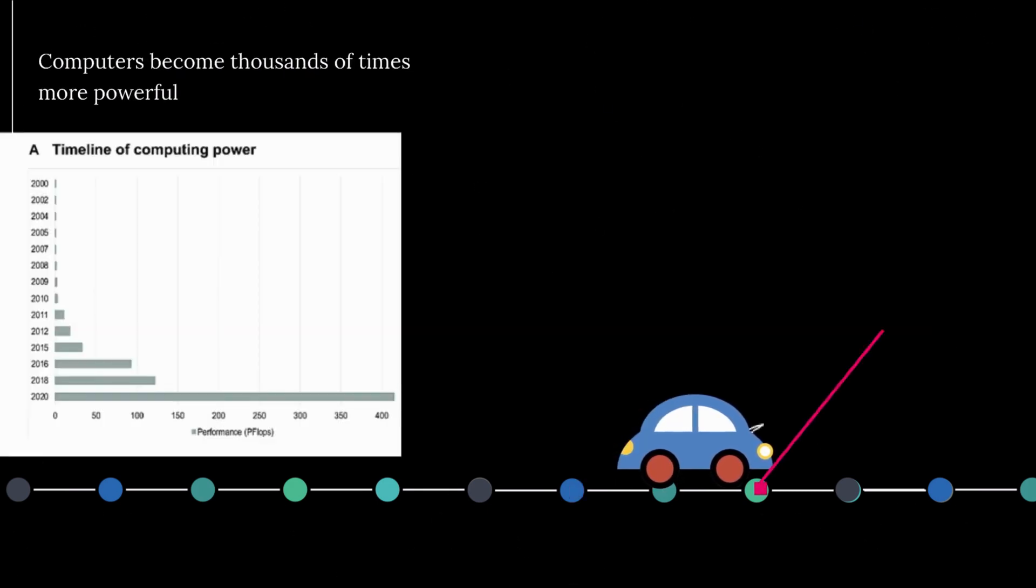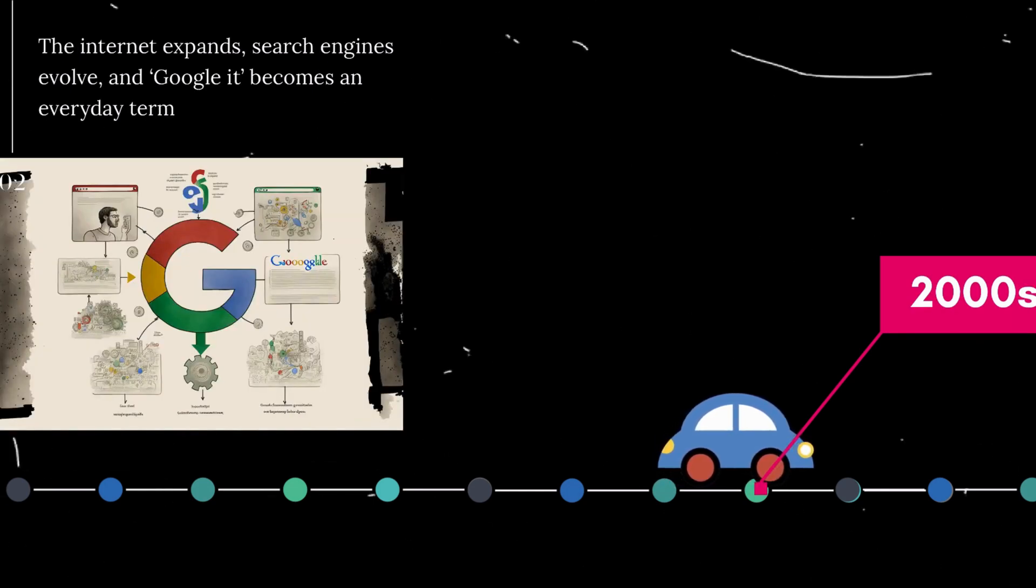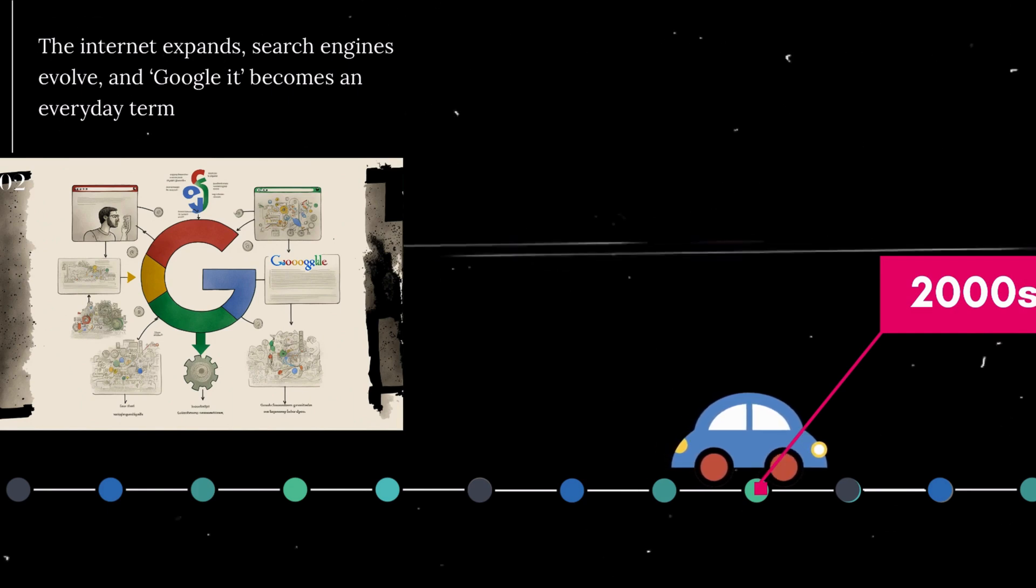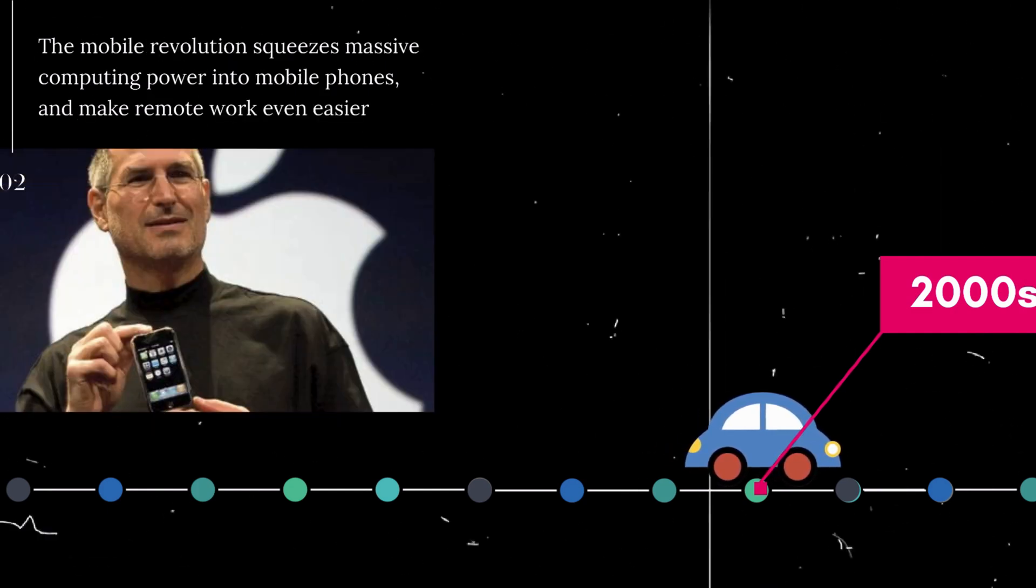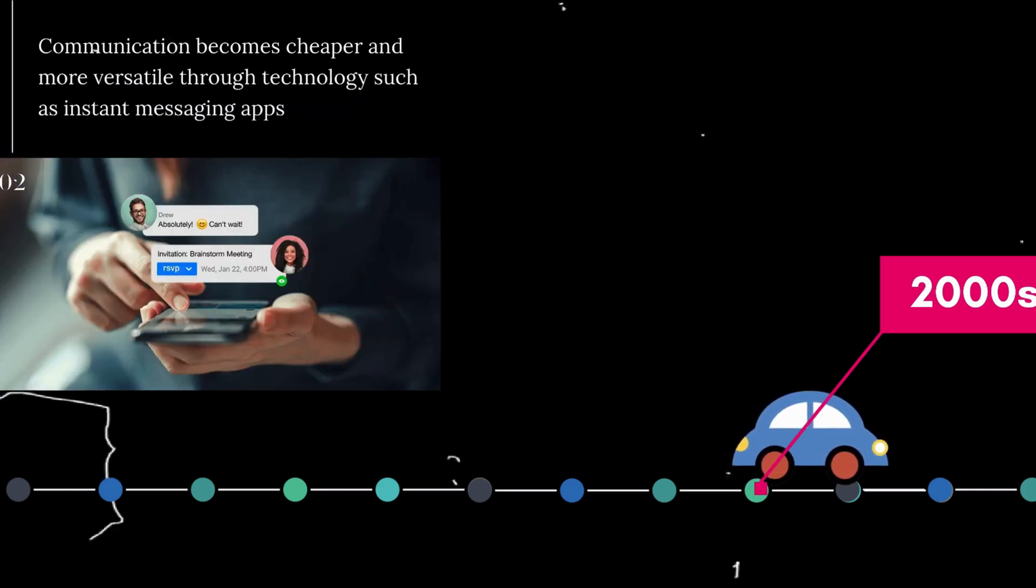2000s. Computers become thousands of times more powerful. The Internet expands, search engines evolve, and 'Google it' becomes an everyday term. The mobile revolution squeezes massive computing power into mobile phones and makes remote work even easier. Communication becomes cheaper and more versatile through technology such as instant messaging apps.